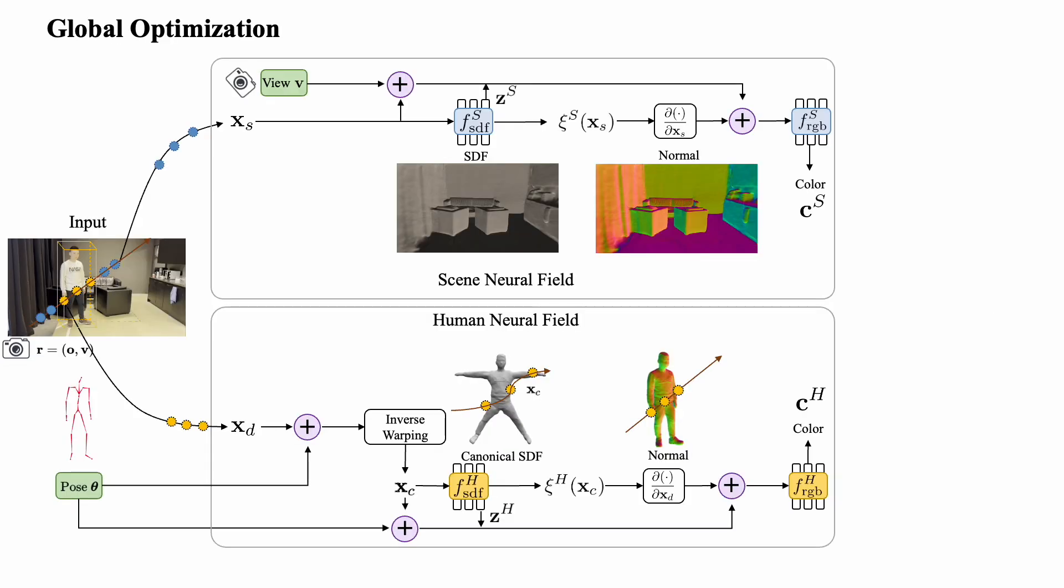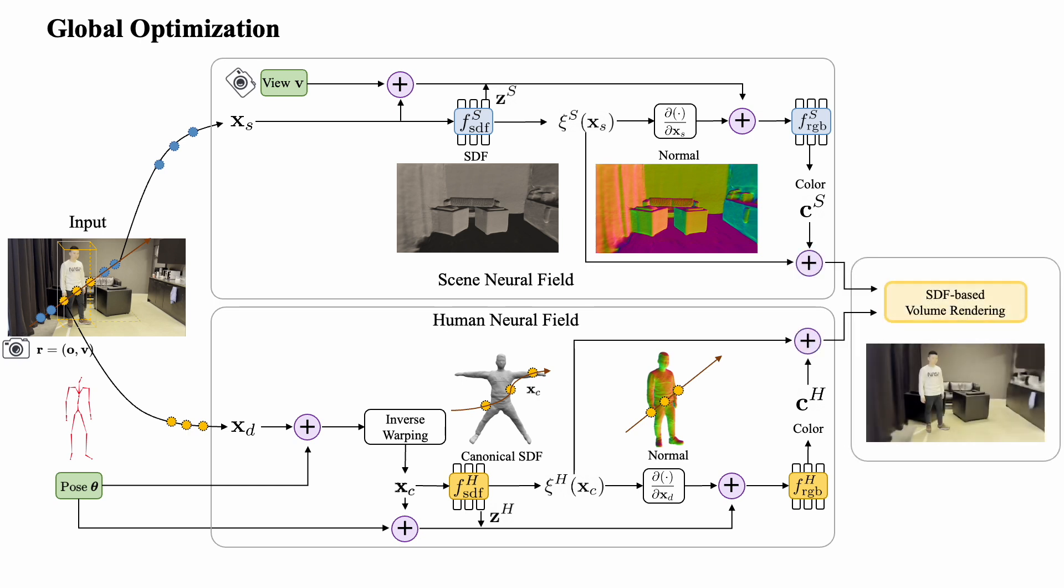To jointly learn the scene and human neural fields, we introduce a global optimization strategy. This involves compositing the outputs of both neural fields into 2D images using SDF-based volume rendering. We then jointly optimize both neural fields with 2D rendering losses and additional human scene physical constraints.